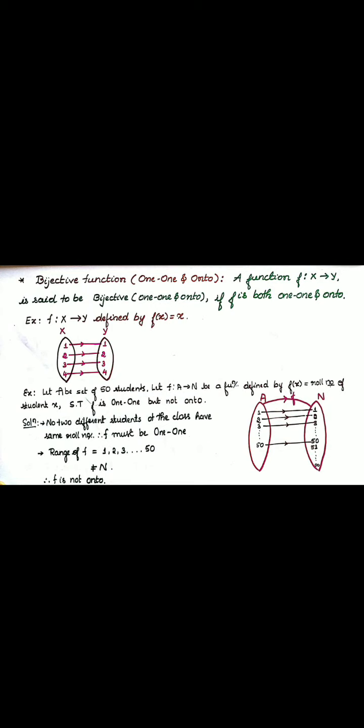Next, let us discuss one example. Let A be the set of all 50 students in a class. Let's define a function f from A to N, where A is set of all 50 students and N is the set of all natural numbers. Function is defined by f of x equals roll number of the student x. Show that f is one-one but not onto.